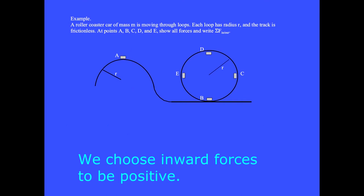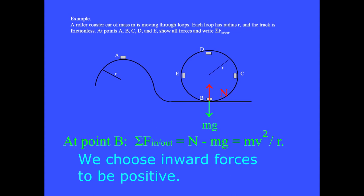At point B, the weight is downward and outward, and the normal force is inward and positive. So we have the sum of the inward and outward forces is plus N minus Mg equals Mv² over R.